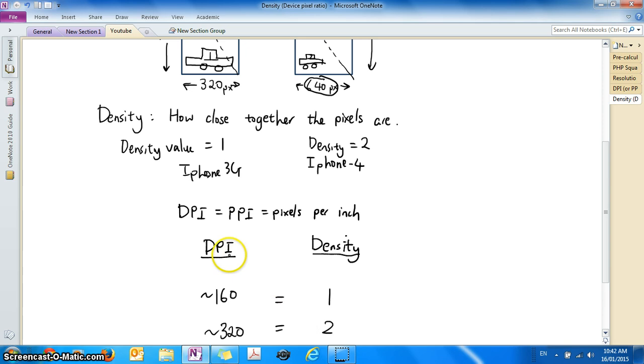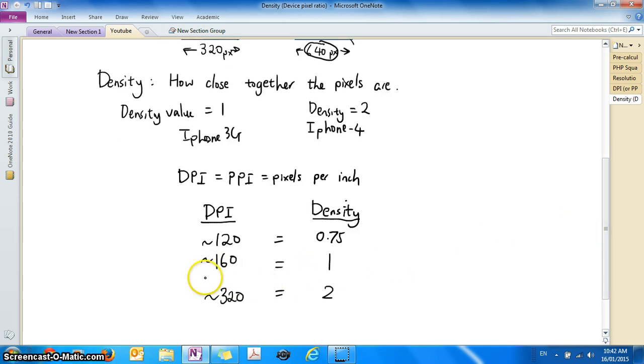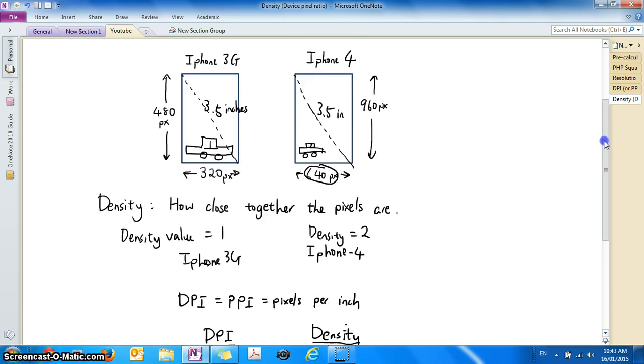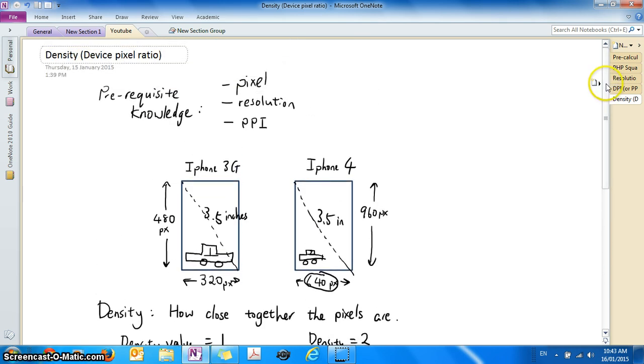And if you have 120 DPI, around 120 it has a density of 0.75. And around 240 it has a density of 1.5. Okay, so that's how the density value relates to DPI's. Okay, I hope this tutorial gives you a better understanding of what density is. See you guys next time.